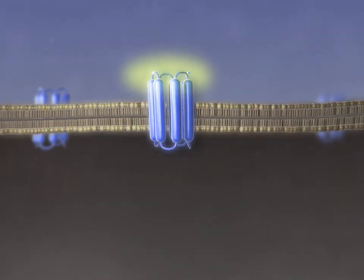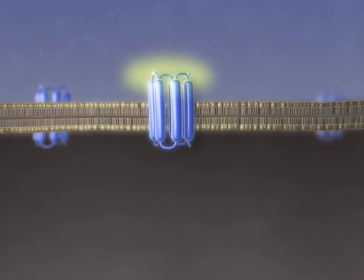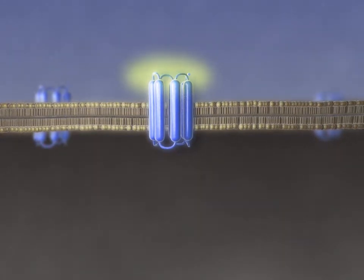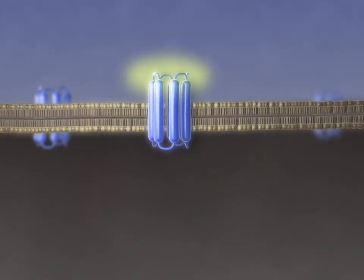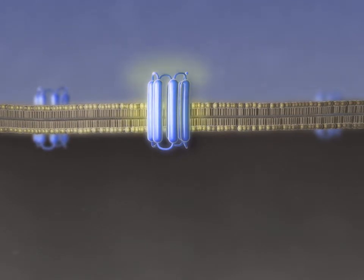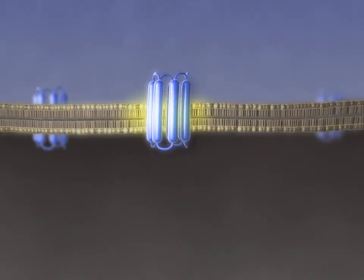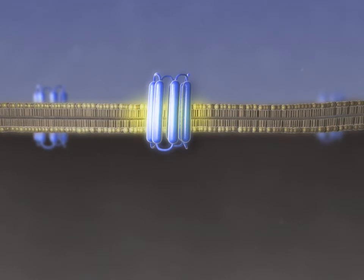Endogenous ligands and drugs bind to the receptors, either on the extracellular N-terminus and loops, or if the ligand is hydrophobic, its binding sites may be in the transmembrane helices.